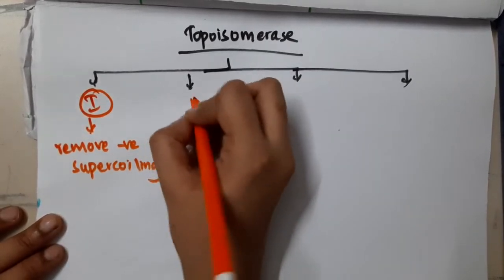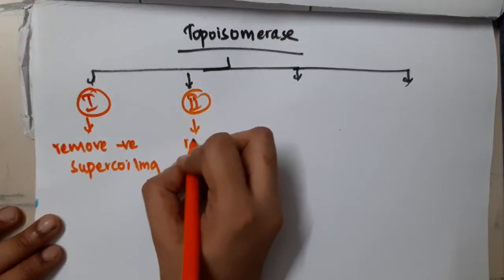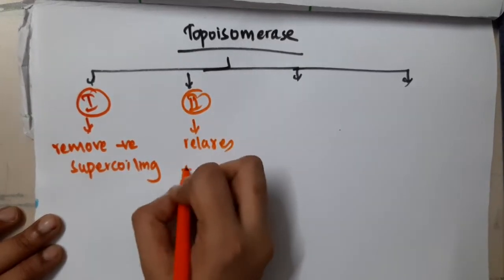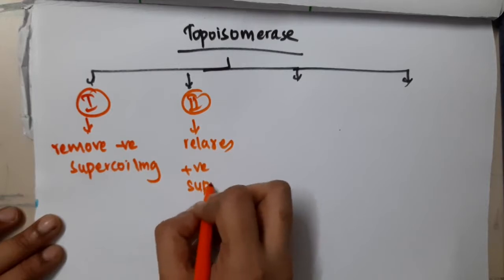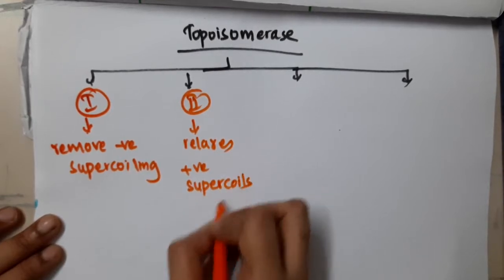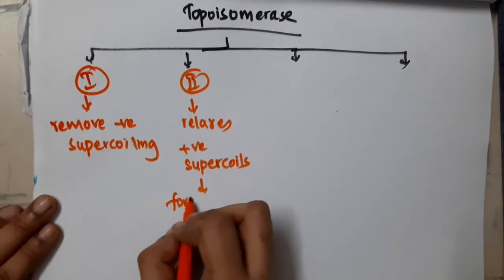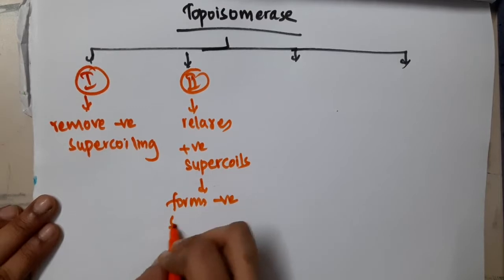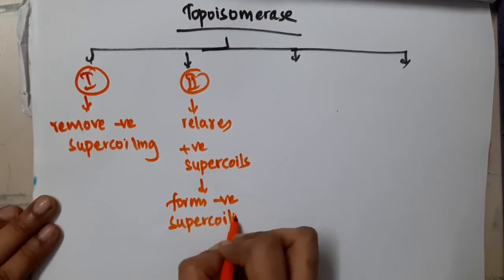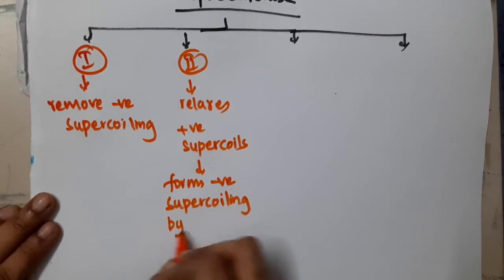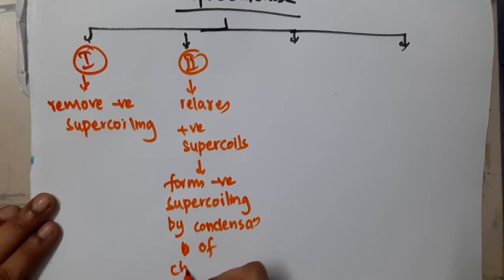Then topoisomerase 2 relaxes positive supercoils and forms negative supercoiling by condensation of chromosomes.